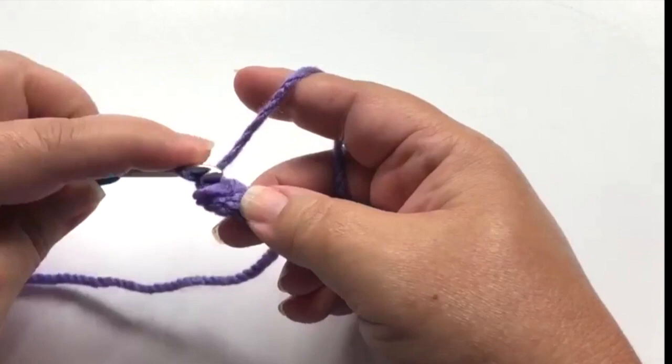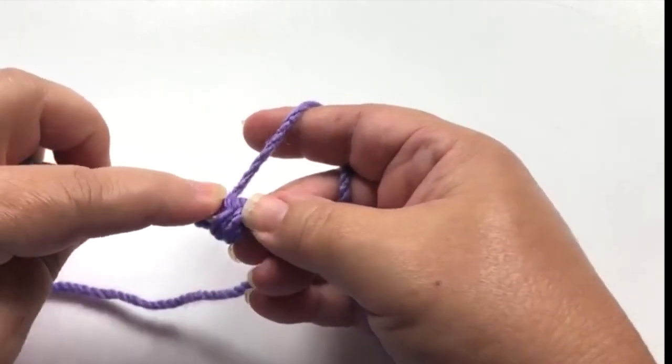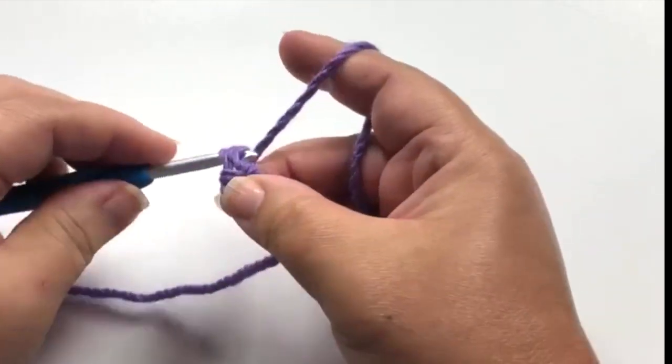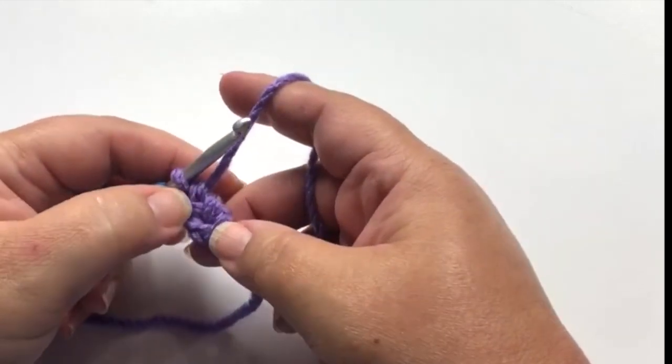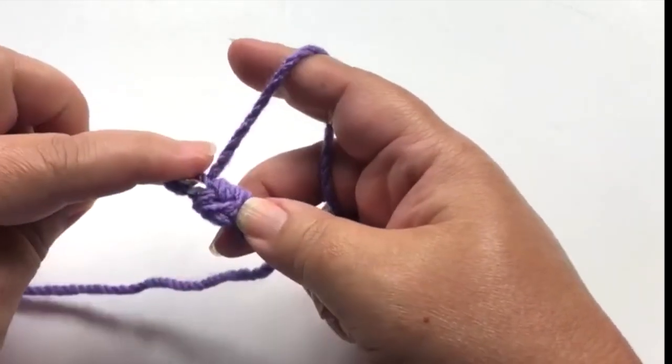For the remainder of the cord you'll work in the same way. You'll be working single crochet under the two loops to the side of the previous stitch. Once you get the hang of it, you'll see it actually goes pretty quickly.